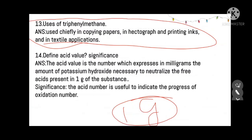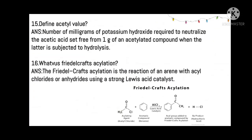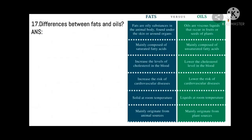The acid number is useful to indicate the progress of oxidation. Define acetyl value: the acetyl value is the number of milligrams of potassium hydroxide required to neutralize the acetic acid set free from one gram of an acetylated compound when it is subjected to hydrolysis. What is Friedel-Crafts acylation? It is the reaction of an arene with an acyl chloride or acid anhydride using a strong Lewis acid catalyst such as aluminum chloride, giving an acyl group product.